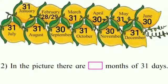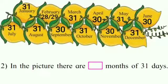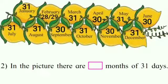Our second sentence: in the picture there are dash months of 31 days. So children, let us count how many months have 31 days. We have January, March, May, July, August, October, and December. Very good, we have a total of seven months having 31 days. So we will write seven in the box.